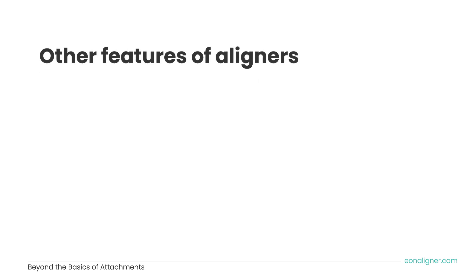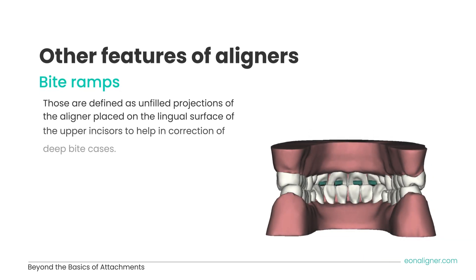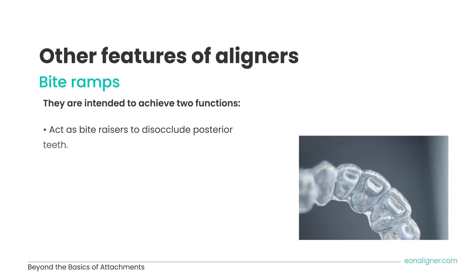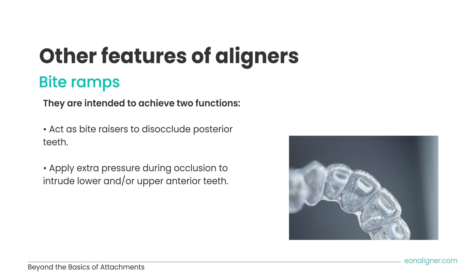One important feature worth discussing alongside attachments is bite ramps. These are defined as unfilled projections of the aligner placed on the lingual surface of the upper incisors to help correct deep bite cases. On the treatment setup simulation, they appear as green buttons on the palatal surface of upper incisors — but they should not be filled with composite or bonded to the teeth; they are projections of the aligners only. Bite ramps act as bite raisers to disocclude posterior teeth and allow extrusion, while also applying extra pressure on anteriors during occlusion to intrude them.